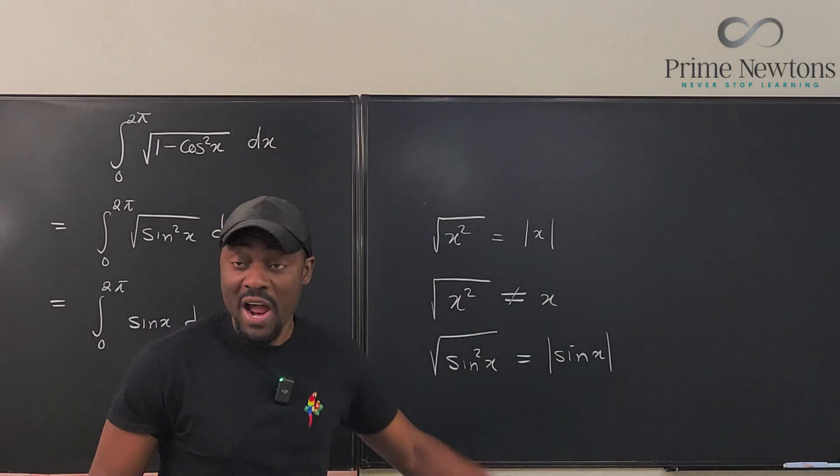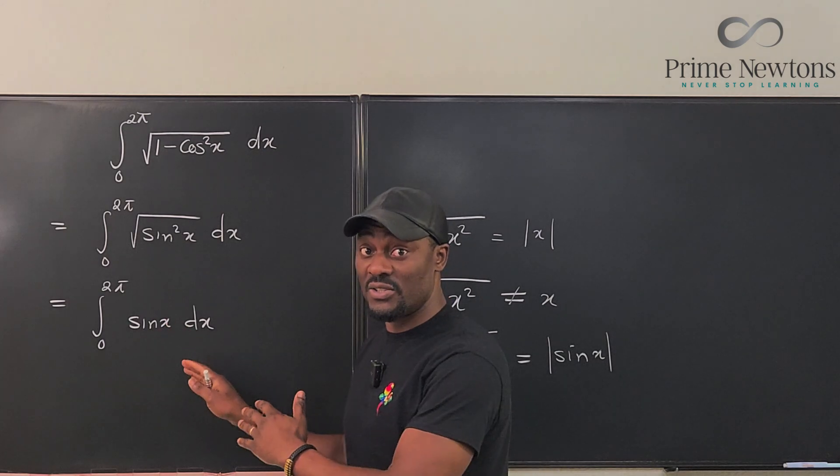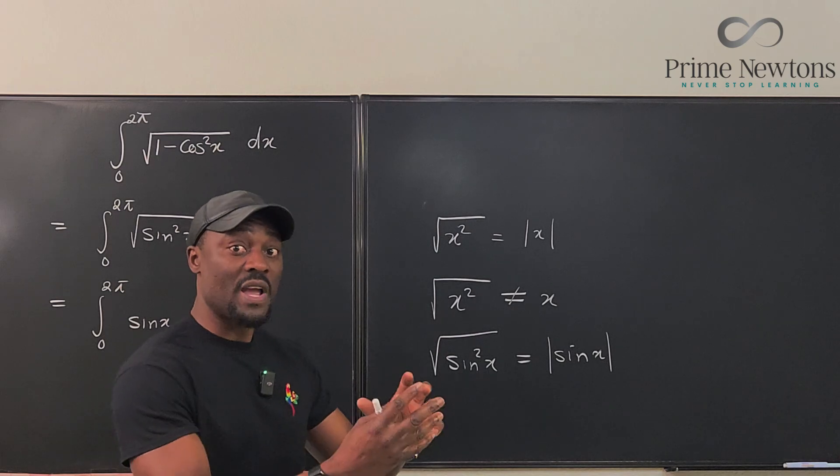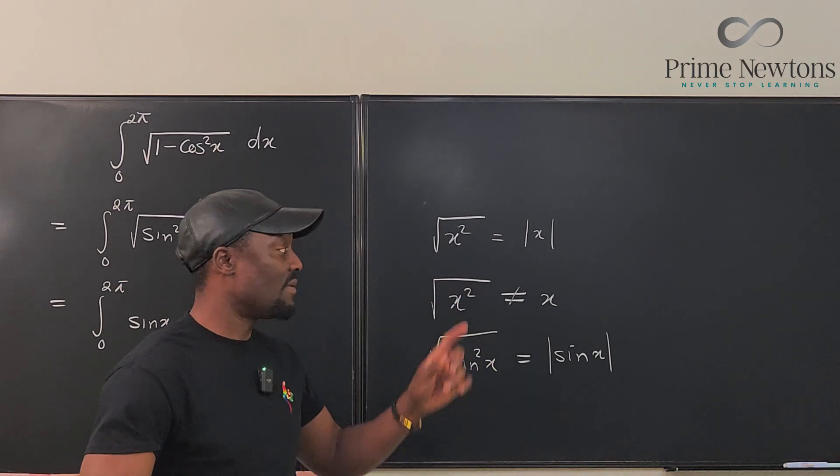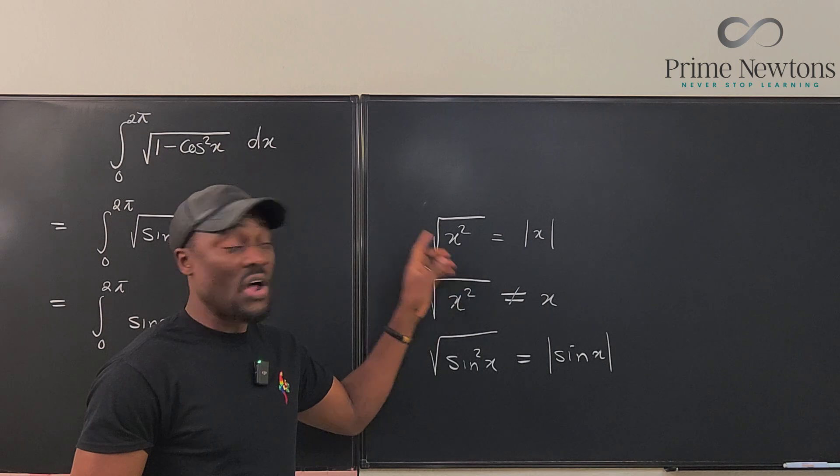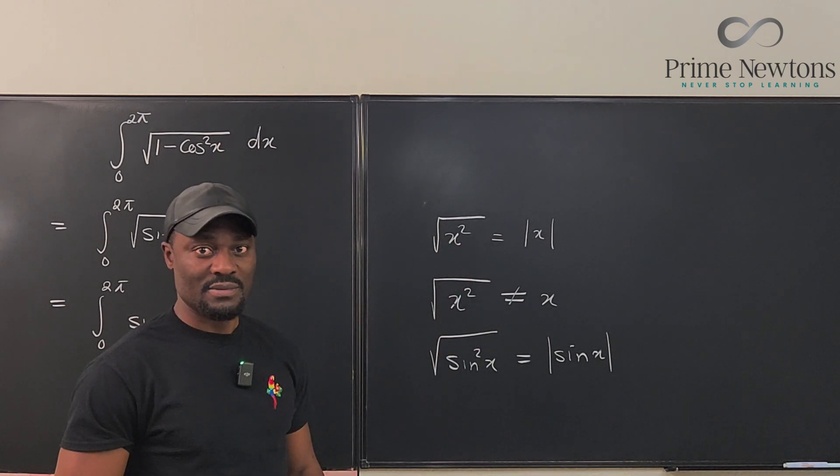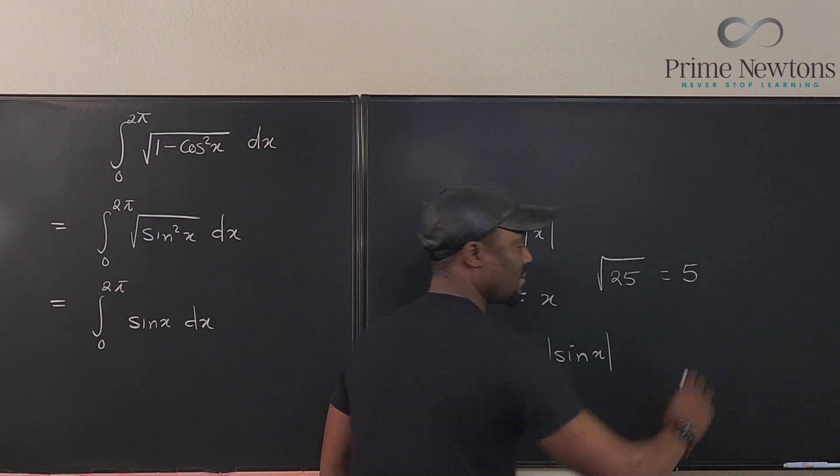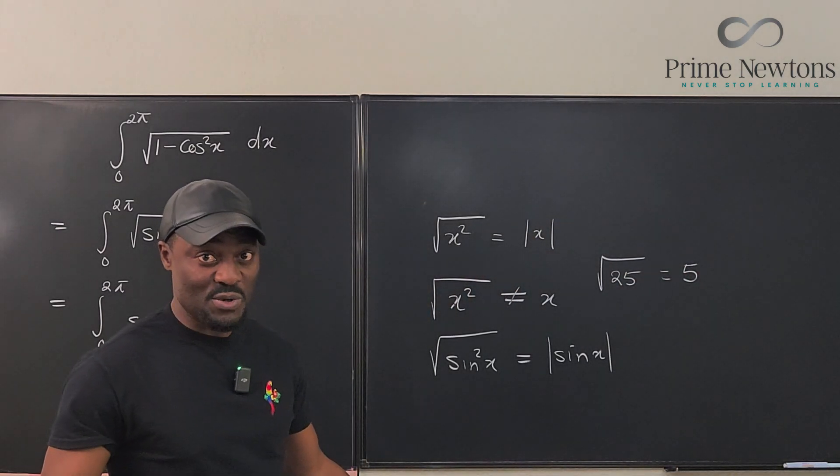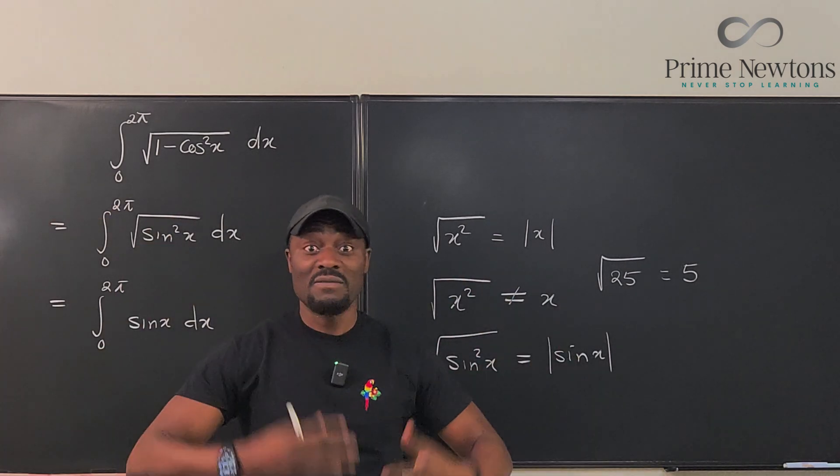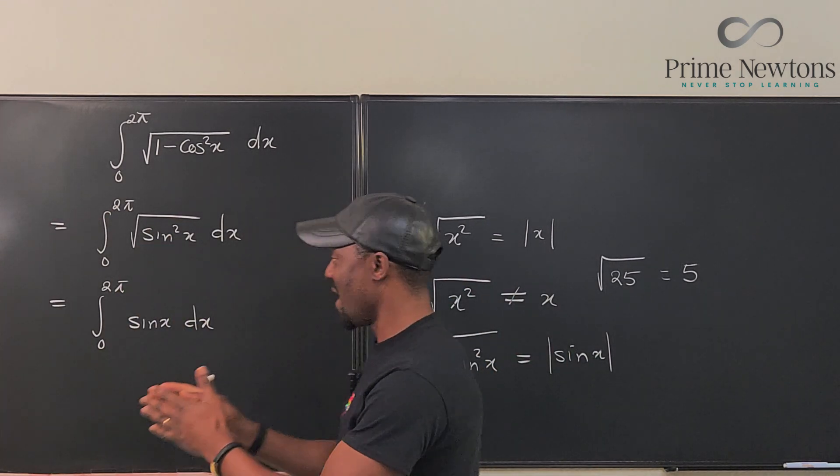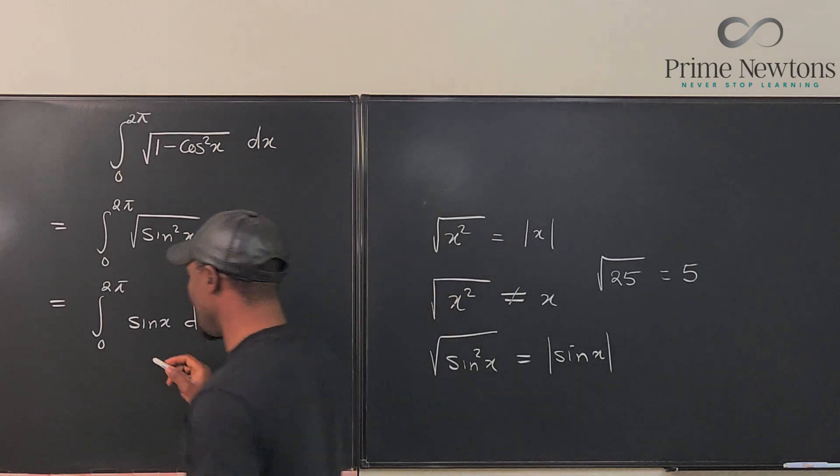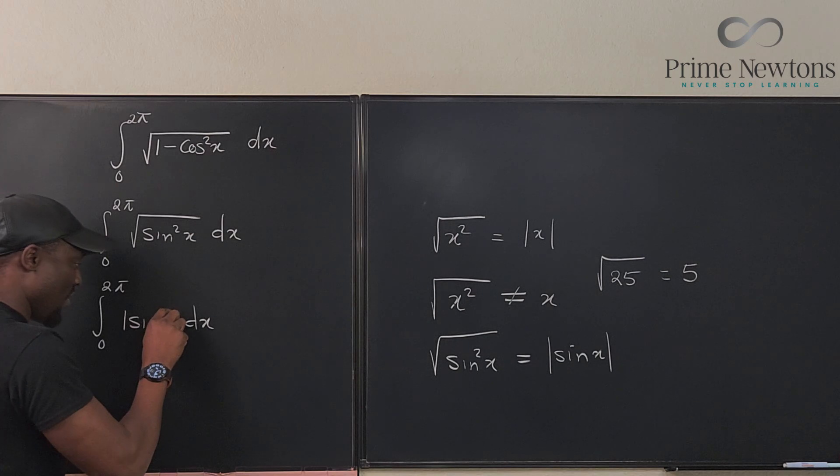So in this case, the answer to this is the absolute value of sine x. If you do not write this here, you cannot get the answer to this integral. And it stems from this concept, that the square root of a square is the absolute value of the root. Unless what you have here is a number. So we know that the square root of 25 equals 5, the principal root. This has come up several times on this channel, and you need to stick to it every time you're doing integrals involving square roots of squares. So the answer to this is actually the absolute value of sine x.